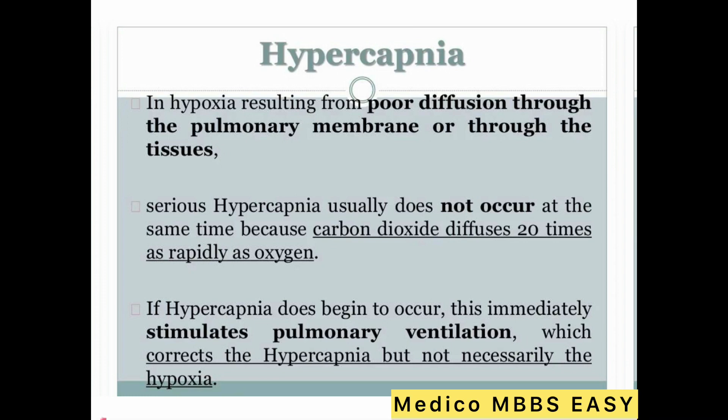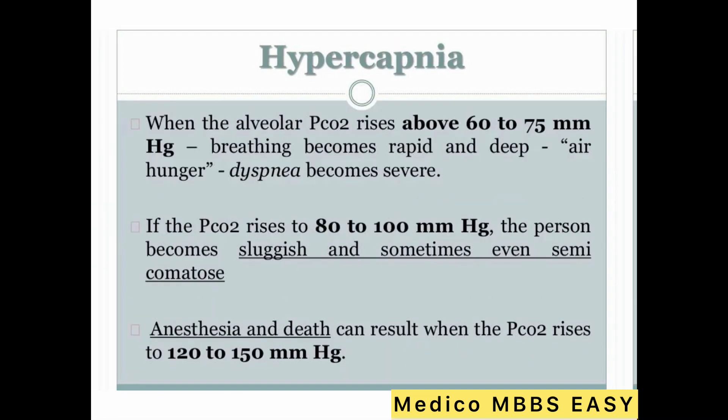In hypoxia resulting from poor diffusion through the pulmonary membrane or through the tissue, serious hypercapnia usually does not occur at the same time, because carbon dioxide diffuses 20 times as rapidly as oxygen. If hypercapnia does begin to occur, the resultant damage stimulates pulmonary ventilation, which corrects the hypercapnia but not necessarily the hypoxia.